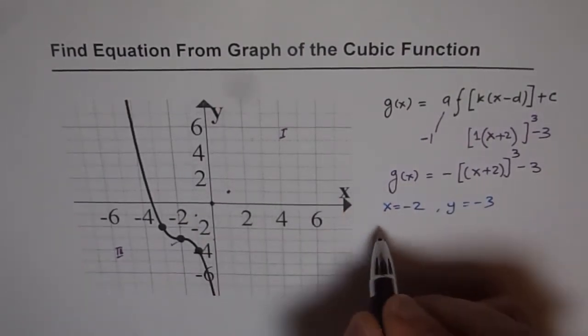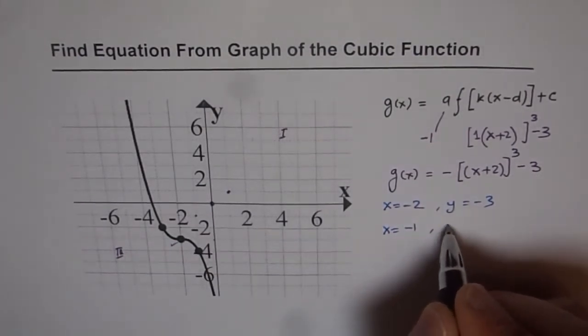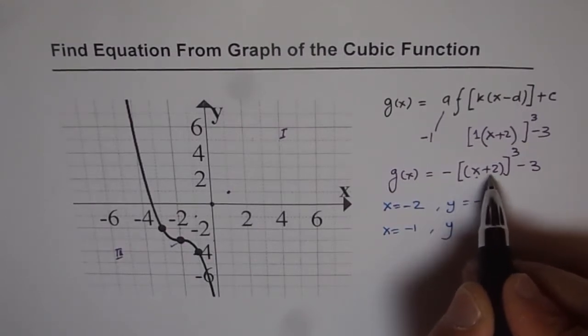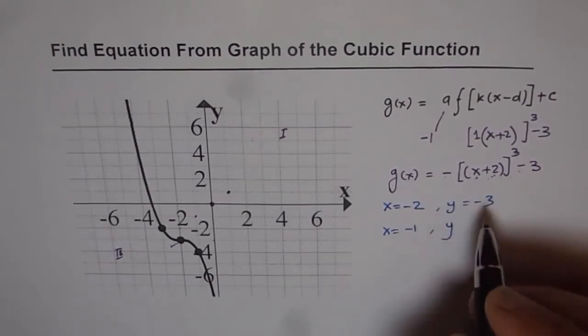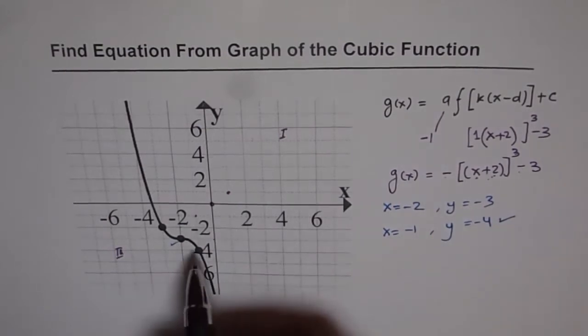That is correct. Now if I write x equals minus 1, then what do I get for y? If I write minus 1 here, minus 1 plus 2 is 1 and 1 cubed will be 1. Minus 1 minus 3 will give me y value of minus 4, which is correct also.